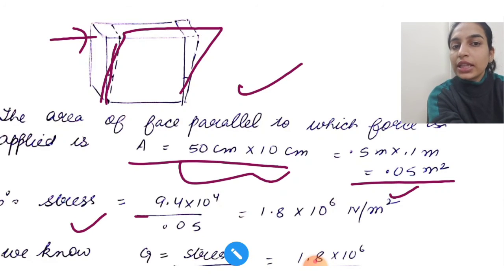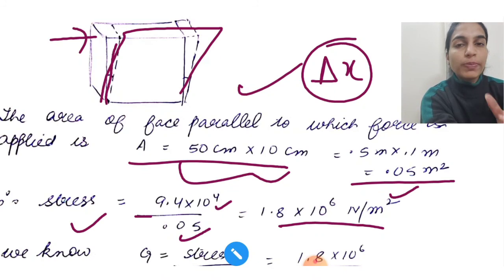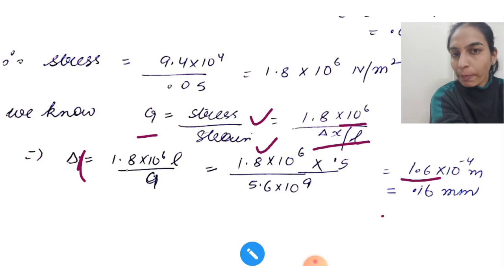You need to calculate delta X, which is related to strain. We know that G is stress upon strain. Stress is 1.8 into 10 to the power 6, strain is delta X by L. Now you have L given, all things are given. Can you find delta X? Obviously you can. So the answer will be 1.6 into 10 to the power minus 4 meters, which can be written as 0.16 millimeter. This was about modulus of elasticity.